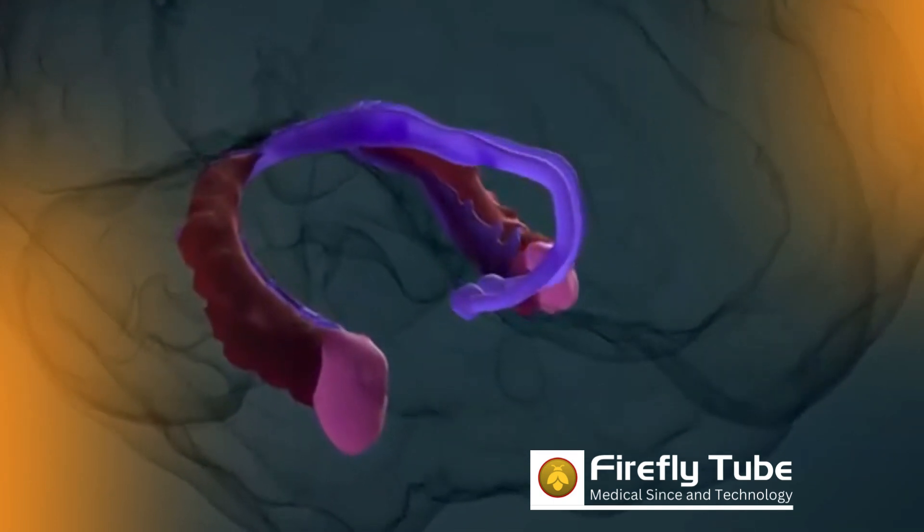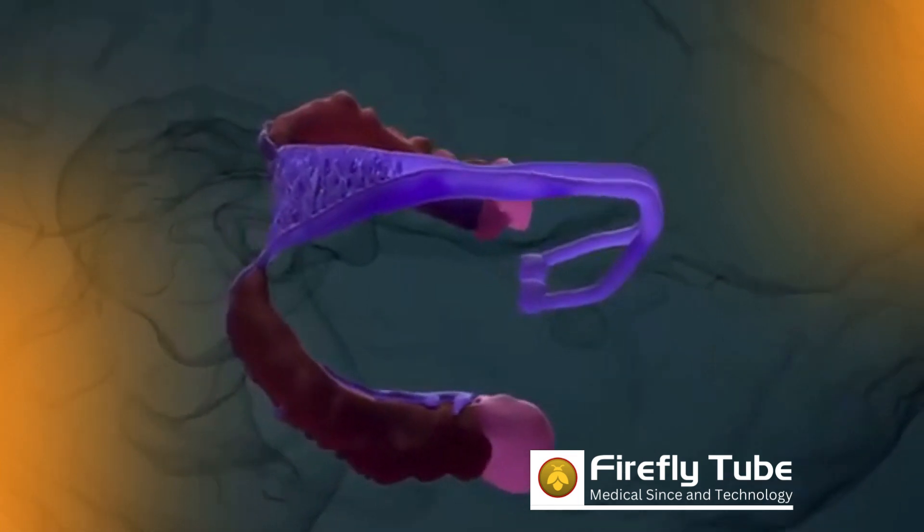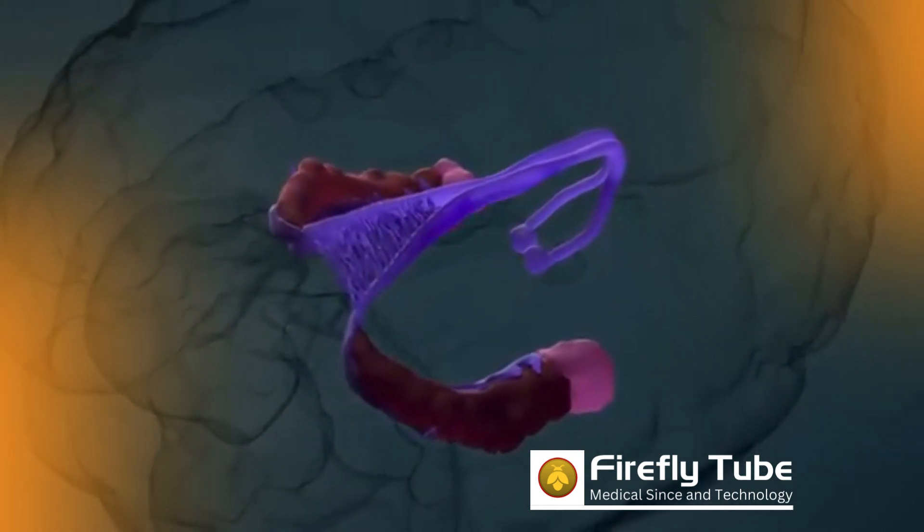If the hippocampus is removed or destroyed, people are unable to store new memories. The amygdala is used in particular to store information about dangers.